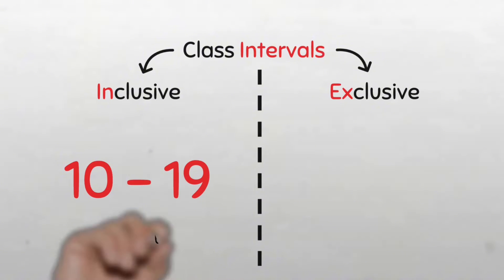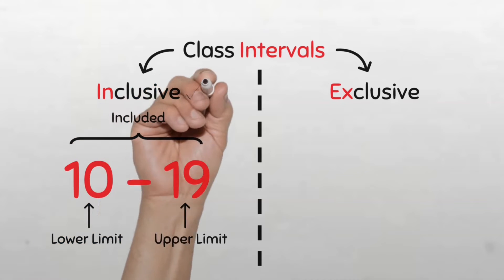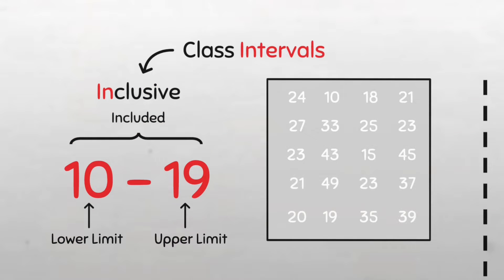In the inclusive type, both the upper and lower limits are included in the class when grouping values, hence the term inclusive classes. So in our example, the class interval 10 to 19 includes all the values in the data from 10 all the way to 19. That means this 10 in our data is counted in this class and any number above 10 is also counted. So we count 15, 18, and this will also include the number 19.